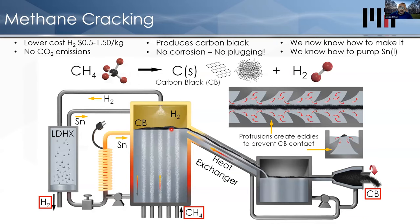Another application we just got funding for using liquid metal is methane cracking — making hydrogen without making CO₂. You take in methane and bubble it up through liquid tin. Tin has no chemical interaction with carbon or hydrogen, so it's completely inert. Inside the bubbles, the methane decomposes into hydrogen, and you get a solid carbon particle that floats on the surface of the tin. Because we can pump liquid tin at extremely high temperatures, we can move the carbon out and do heat recuperation to make the process efficient. We're about to start building this prototype as well.